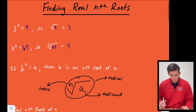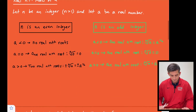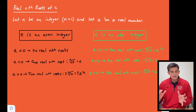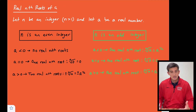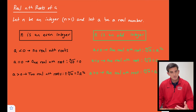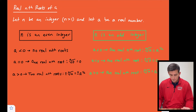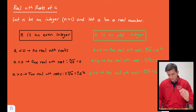When we had the square root of nine, we could say this is positive or negative three. Now for when n is an odd integer — say the cube root or fifth root — if a is less than zero we do have a real nth root. For example, the cube root of negative eight is negative two, because negative two times negative two times negative two gives us negative eight. If a equals zero the root is zero, and if a is greater than zero there is one real nth root, which is a to the one over n.